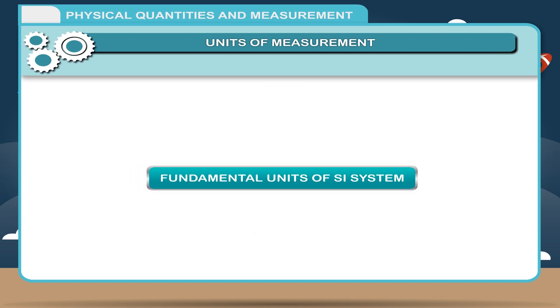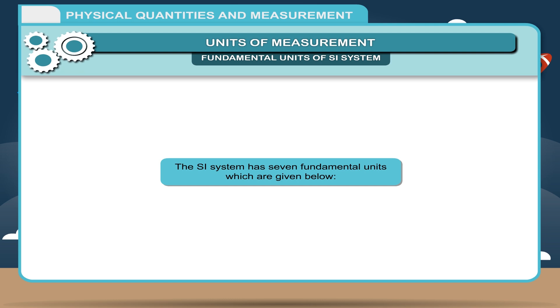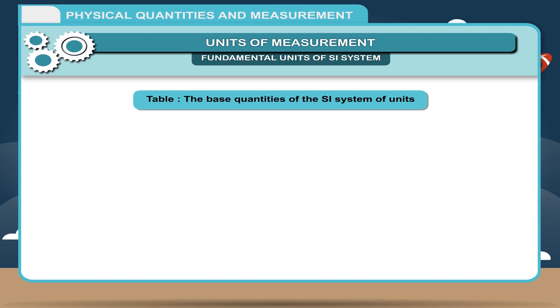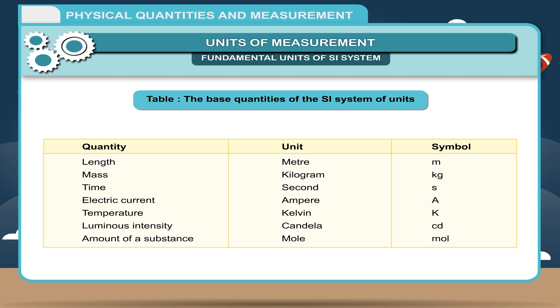Fundamental units of SI system: The fundamental units do not depend on any other units. They have their own values. The SI system has 7 fundamental units which are given below. The base quantities of the SI system are: Length (Meter, M), Mass (Kilogram, Kg), Time (Second, S), Electric current (Ampere, A), Temperature (Kelvin, K), Luminous intensity (Candela, CD), Amount of a substance (Mol).